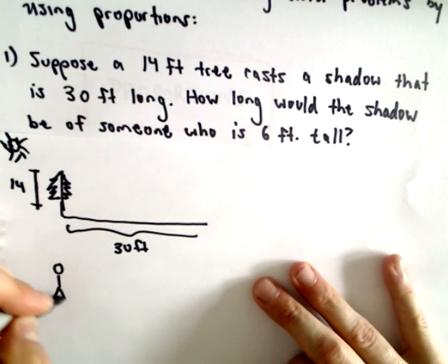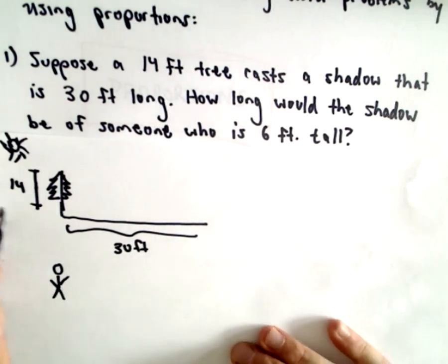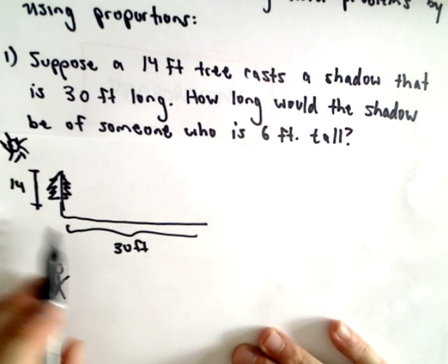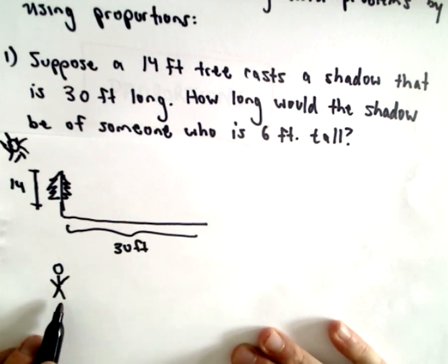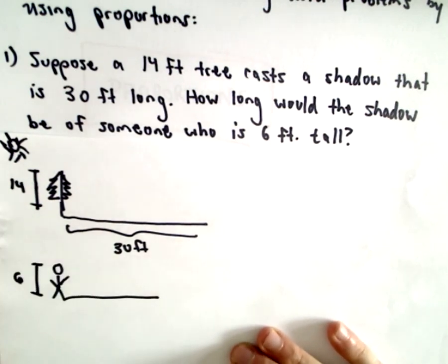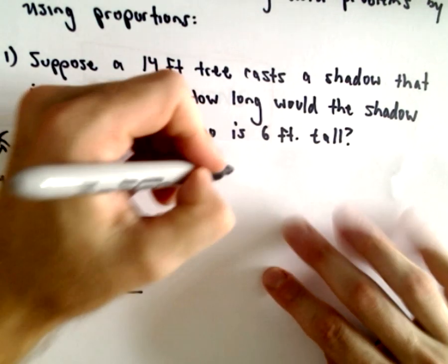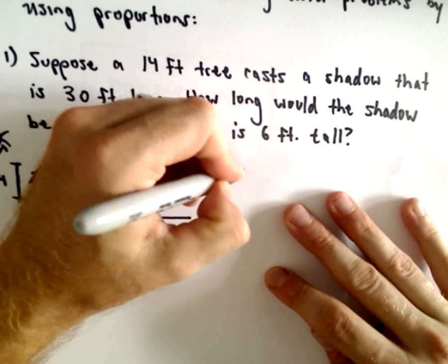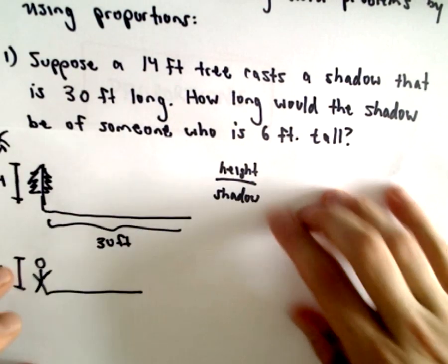They always like to ask these types of problems with proportions. Okay, we've got a tree here. There's my little tree here, and that tree is 14 feet tall. It makes a 30-foot long shadow, so maybe there's the good old sun up there. And there's the shadow, so we know that the shadow is 30 feet long.